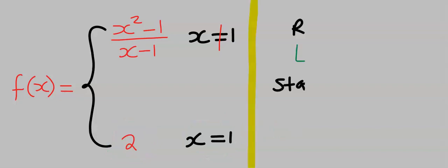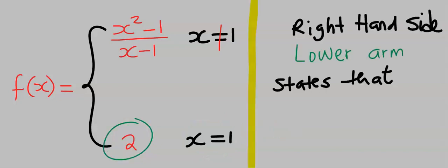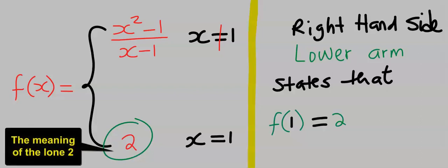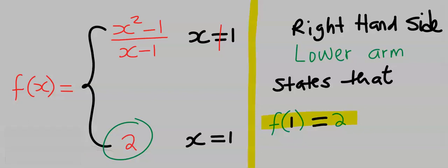The right-hand side, that is, the lower arm, states that there was a function that the limit, as x tends to 1, gave us 2. However, we were not given the function.